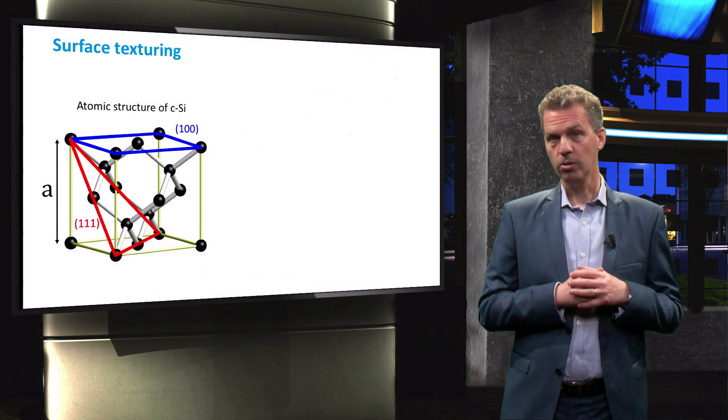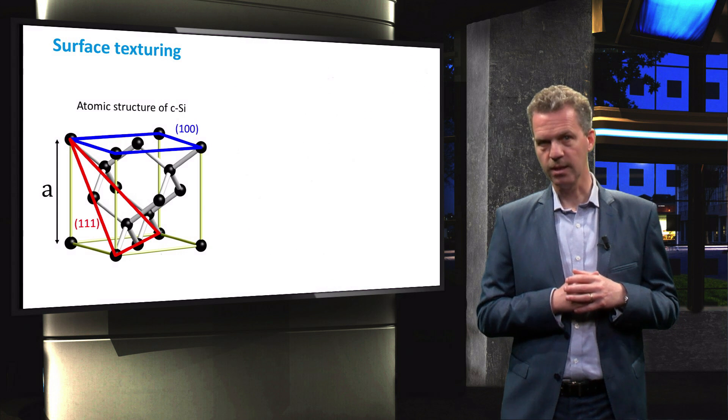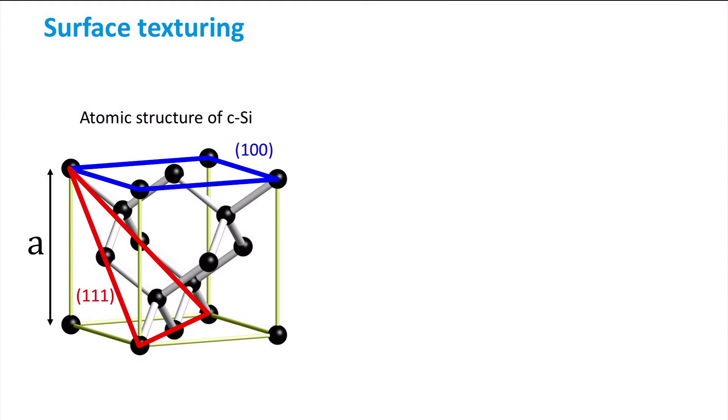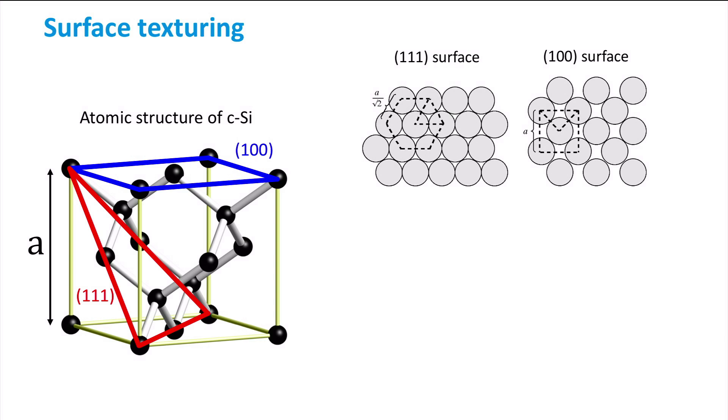When we introduce the atomic structure of crystalline silicon we discuss the two most commonly used crystal orientations 1 1 1 and 1 0 0. When we now look at the two-dimensional projection of the 1 1 1 and 1 0 0 surface, where the atoms are approximated as spheres, we can see that there is a difference in atomic density. This is what we call the packing density and can be calculated as the fraction of the area taken by the atoms.